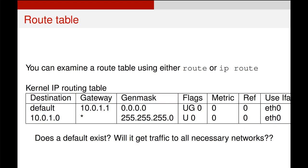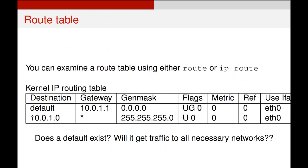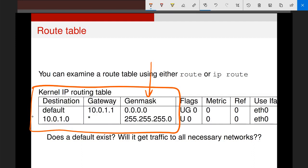If you type 'route', you will see a table displayed by any computer or router. The main columns you need to focus on are: the destination, where your traffic is being sent to, and the netmask — we'll come back to that later.